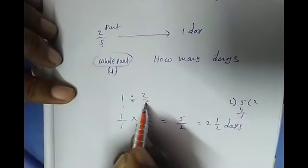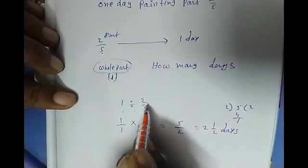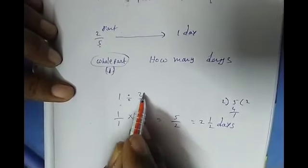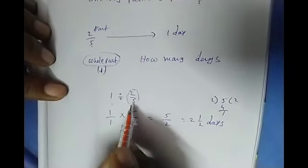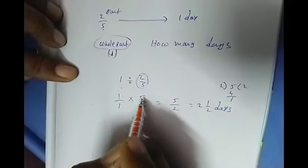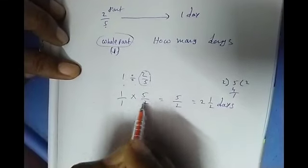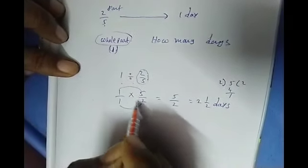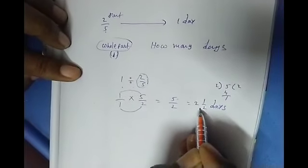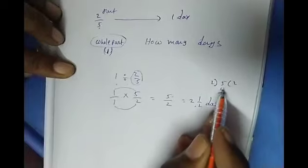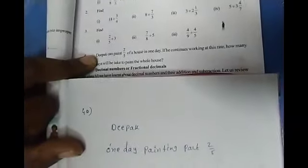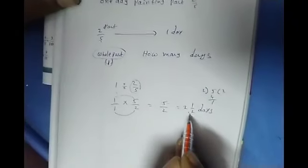We calculate 1 divided by 2 by 5 — full part divided by the daily work rate. 1 means a whole number, so 1 by 1 multiplied by the reciprocal of 2 by 5, which is 5 by 2. Numerator times numerator: 5 ones are 5. Denominator times denominator: 2 ones are 2. So 5 by 2 means 2 and a half. Therefore, Deepak can complete the full house in 2 and a half days.